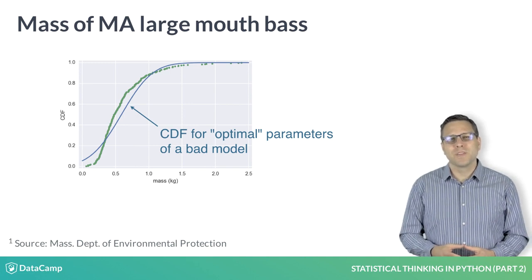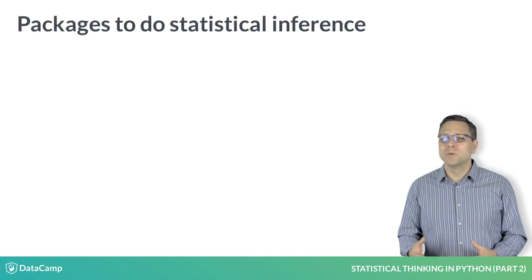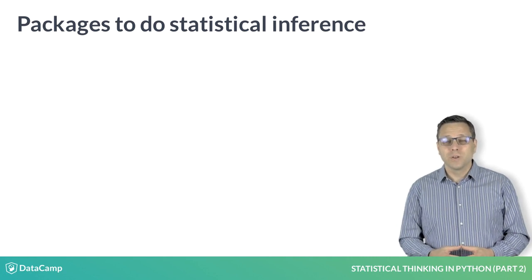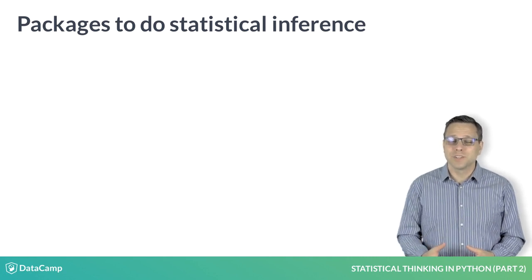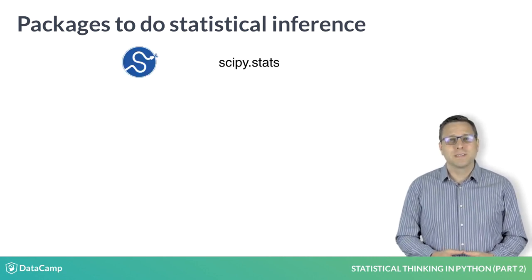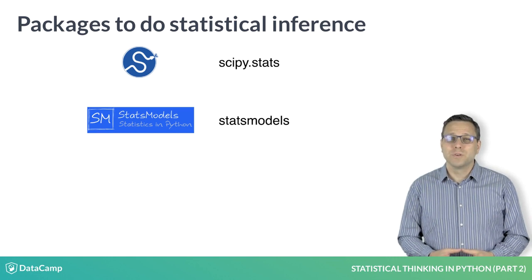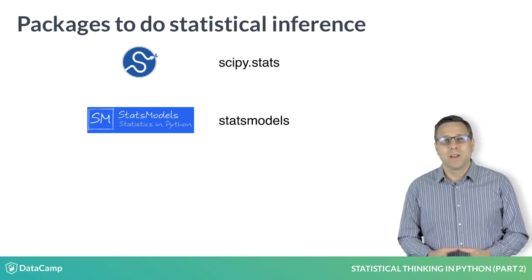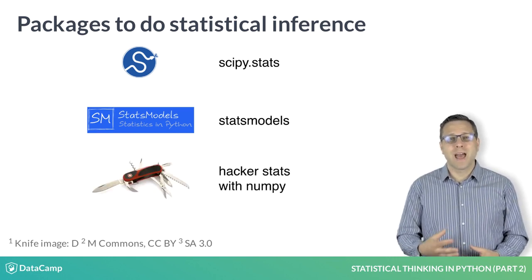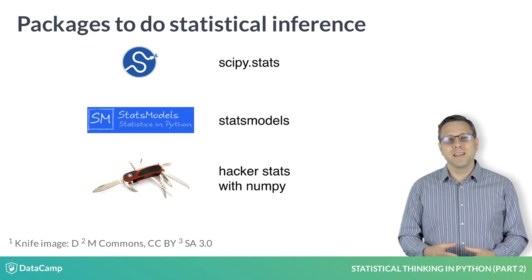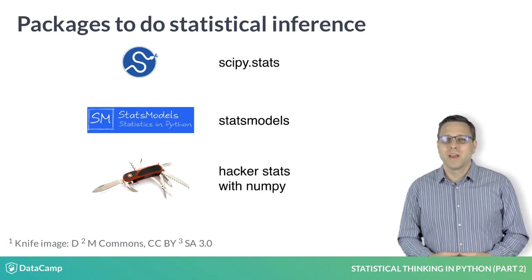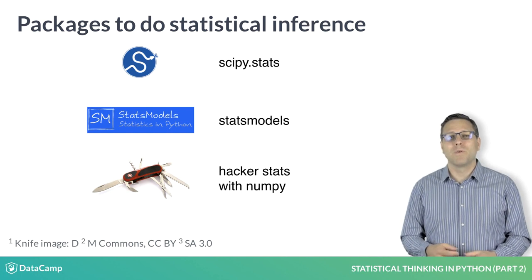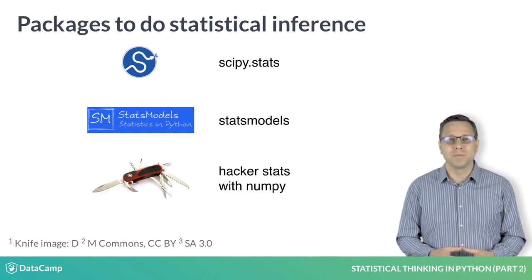I pause here to note that there are great tools in the Python ecosystem for doing statistical inference, including by optimization — scipy.stats and statsmodels being two good examples. In this course, however, we focus on hacker statistics because the technique is like a Swiss army knife. The same simple principle is applicable to a wide variety of statistical problems.